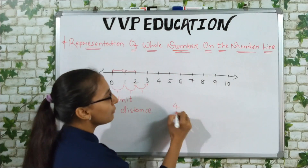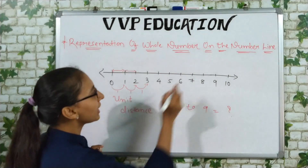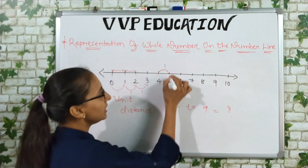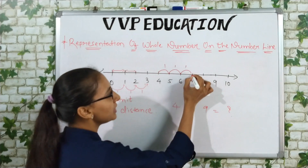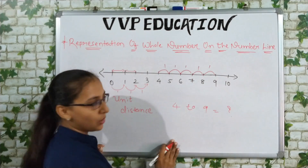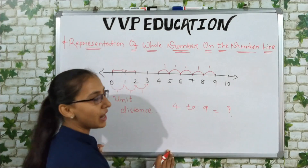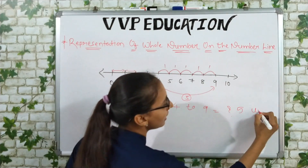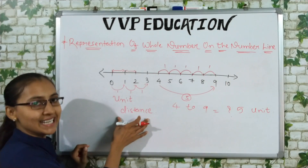For example, the distance between 4 and 9: 4 to 5 is 1 unit, 5 to 6 is 1 unit, 6 to 7 is 1 unit, 7 to 8 is 1 unit, 8 to 9 is 1 unit. Counting them: 1 plus 1 plus 1 plus 1 plus 1 equals 5. So the distance from 4 to 9 is 5 units.